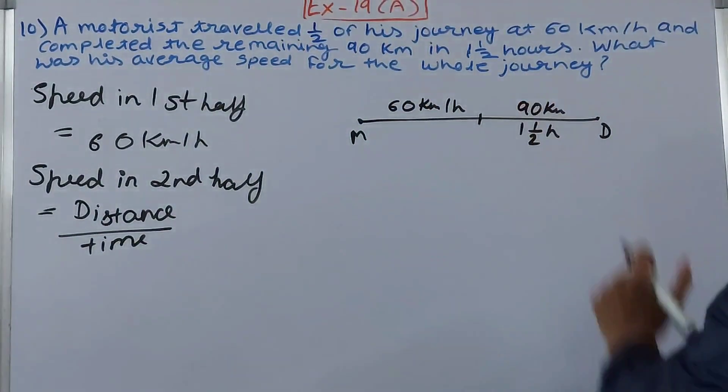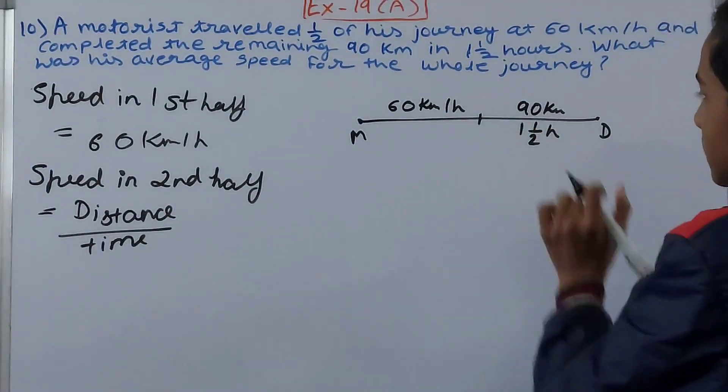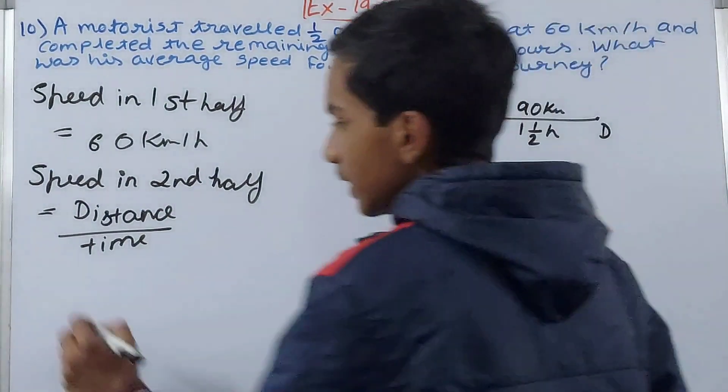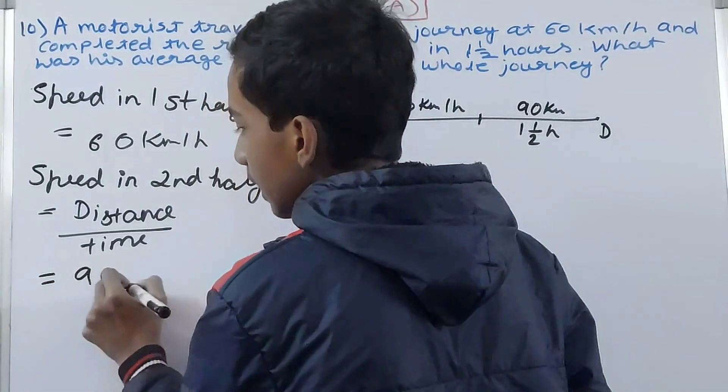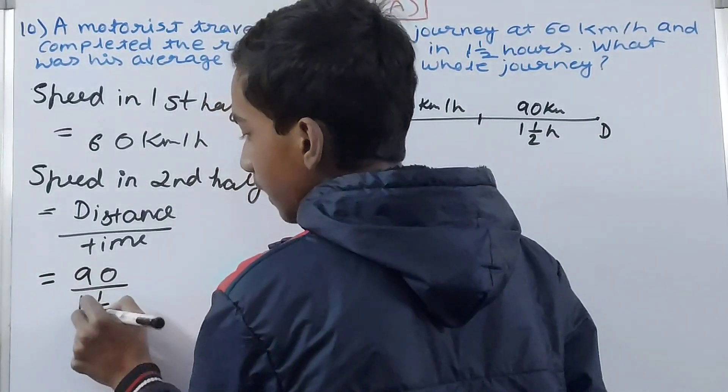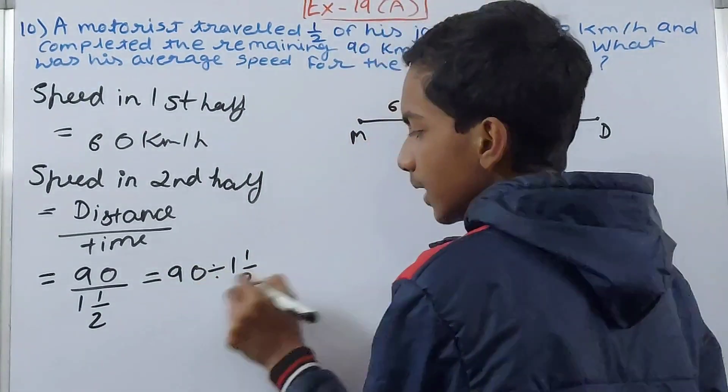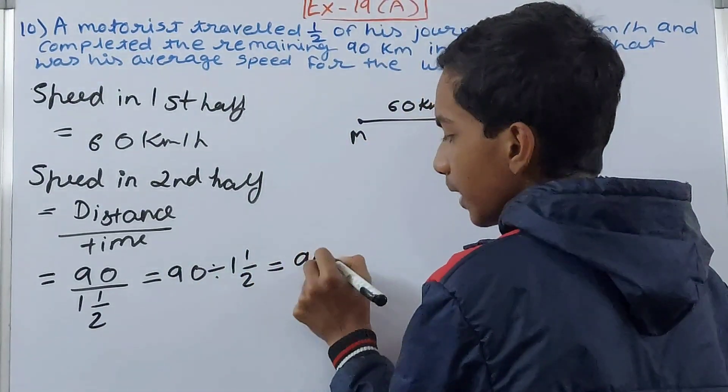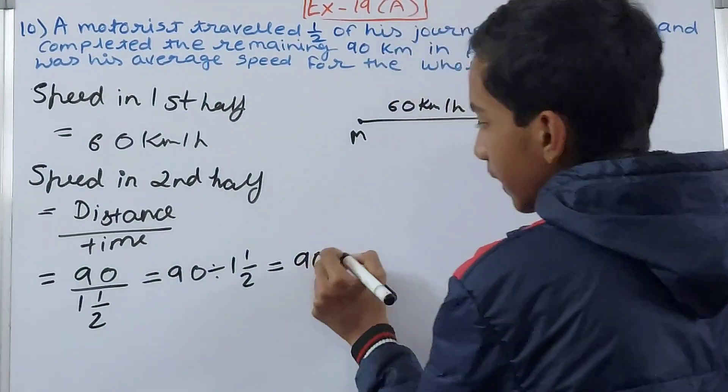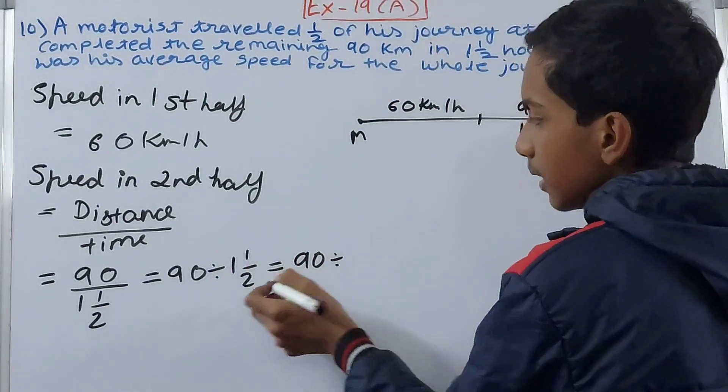So what do we get here? 90 upon one and a half, or simply you can say 90 divided by one and a half. That will be 90 divided by 3/2.